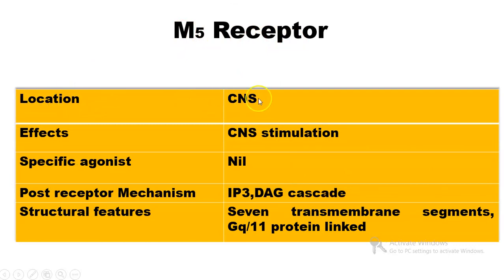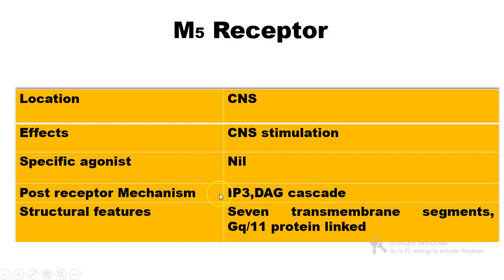Next are M5 receptors, located in the CNS. The effects of M5 receptors are CNS stimulation, and the specific agonists have not yet been found. The post-receptor mechanism includes the IP3 and DAG cascade, and the structural features include 7 transmembrane segments and a Gq protein link.